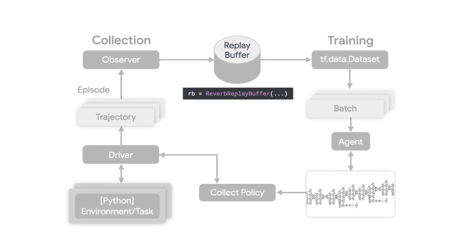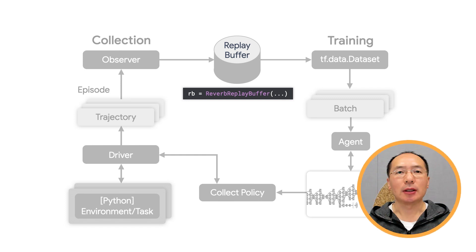In the original Atari DQN work by DeepMind in 2015, there's a technique called experience replay to make the network updates more stable. Basically, at each time step of data collection,